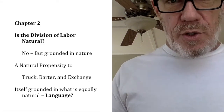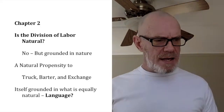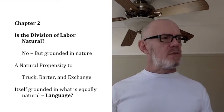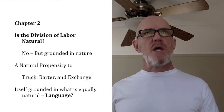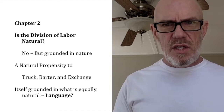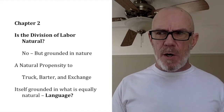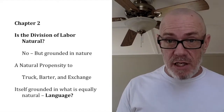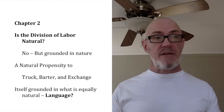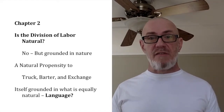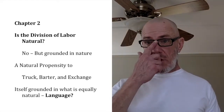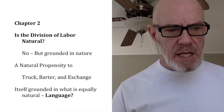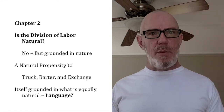Now I want to talk about Chapter 2 of Adam Smith. Chapter 2 begins with the question: what's the principle that gives rise to the division of labor? The short answer is self-interest. The principle that gives rise to the division of labor is self-interest. So we want to explore what that means and how we get there.